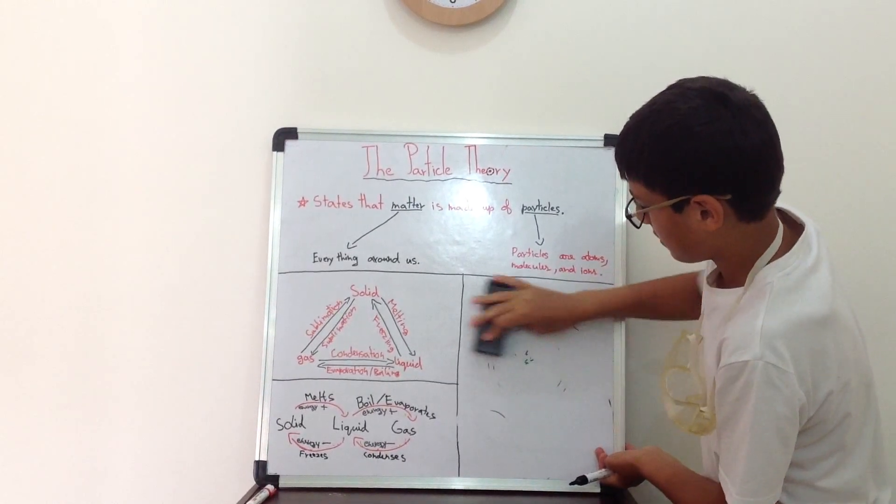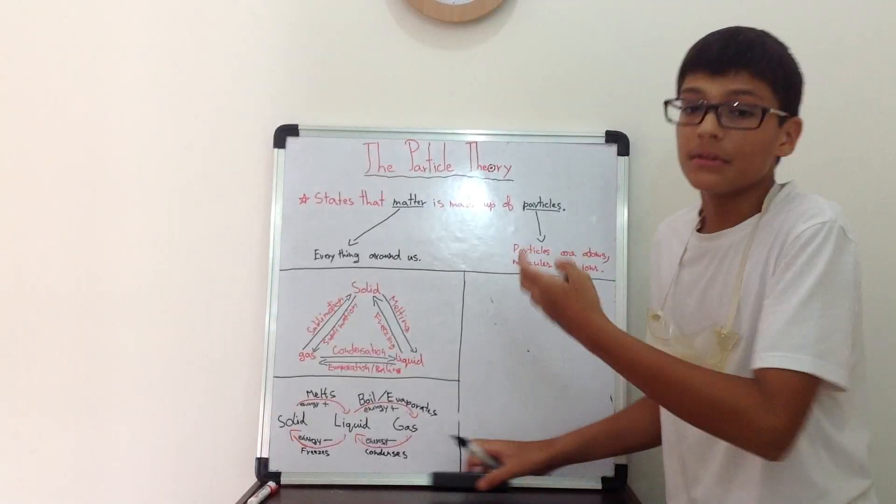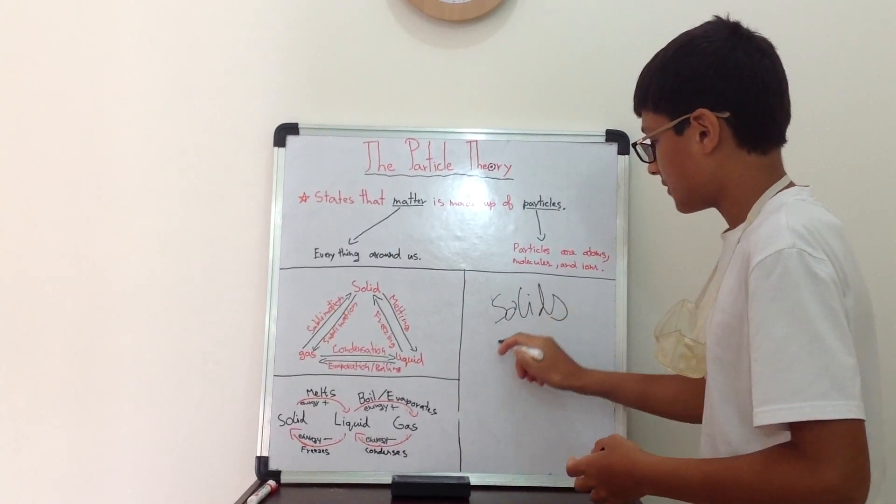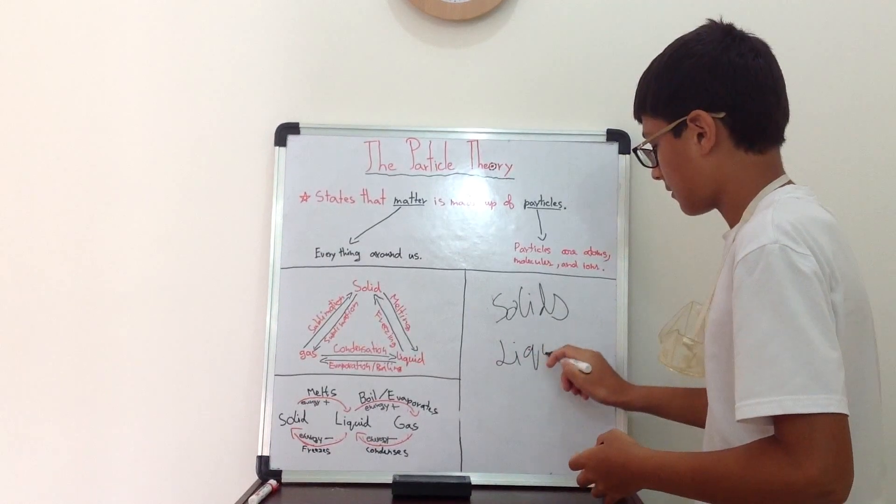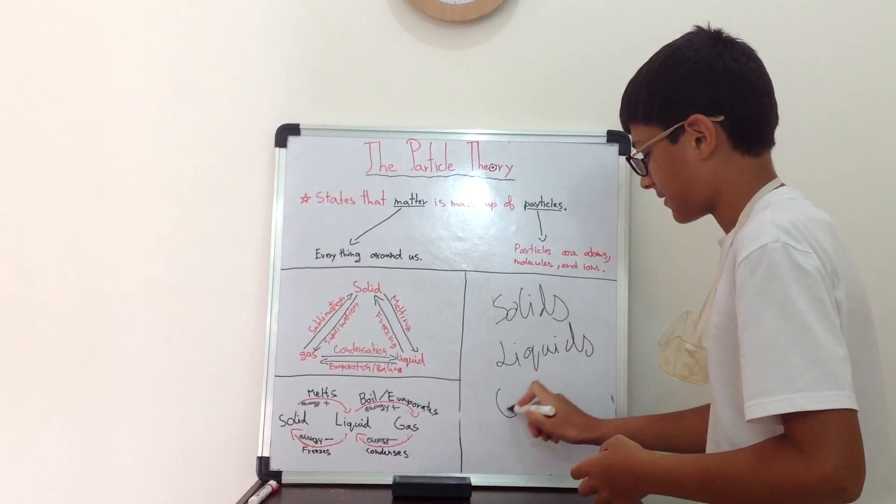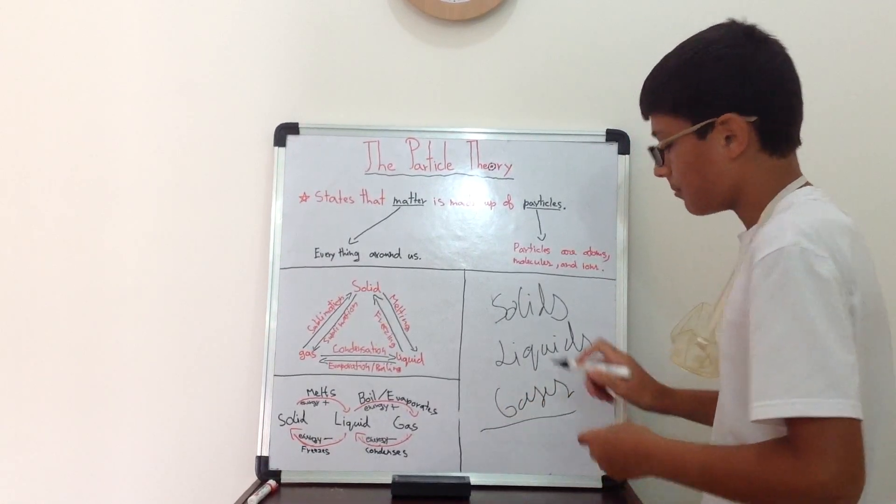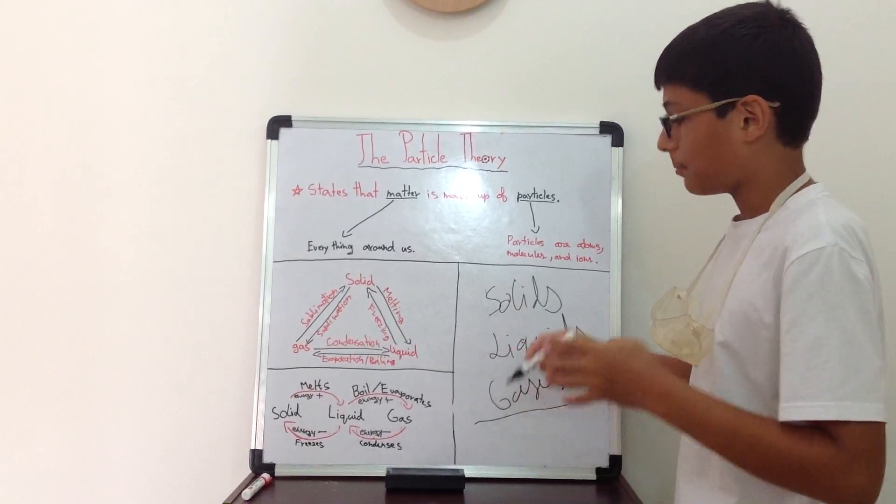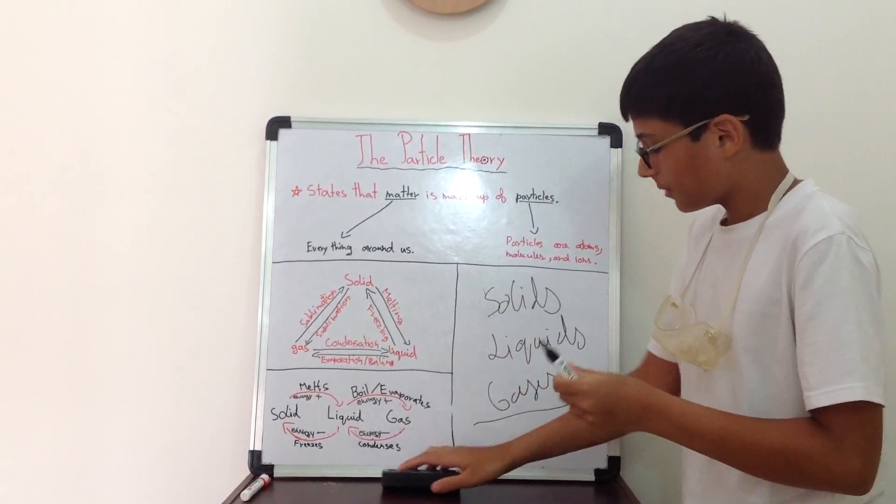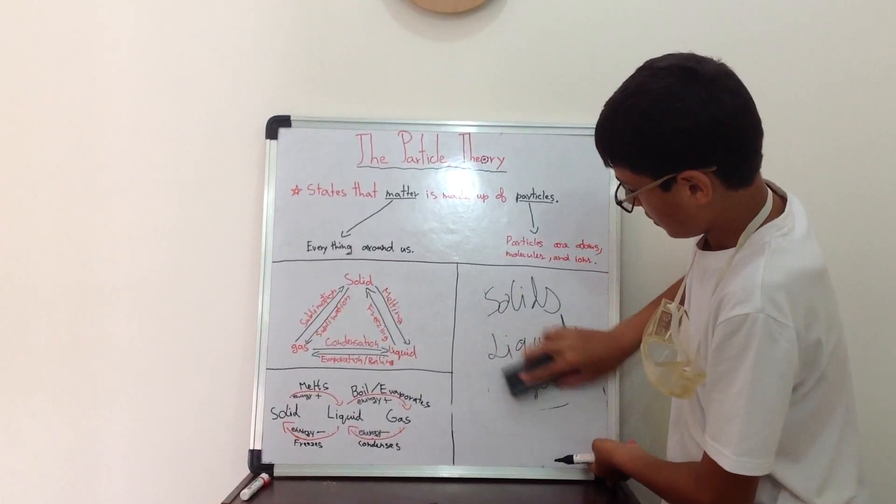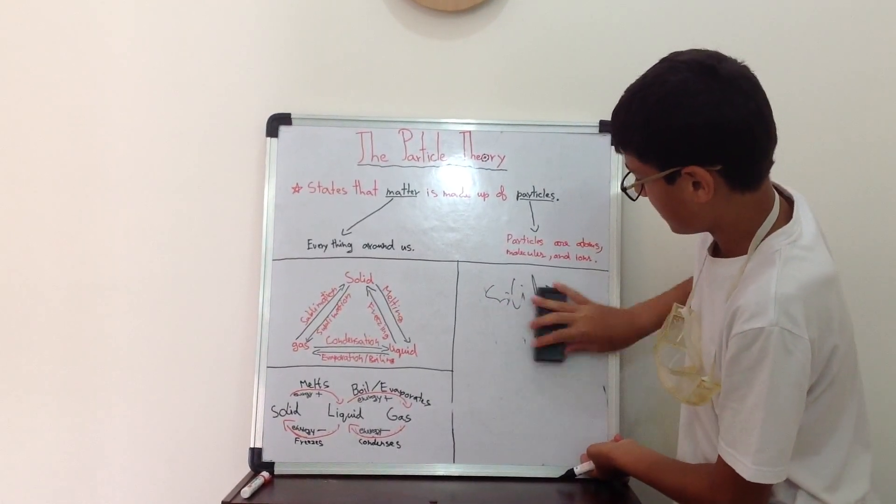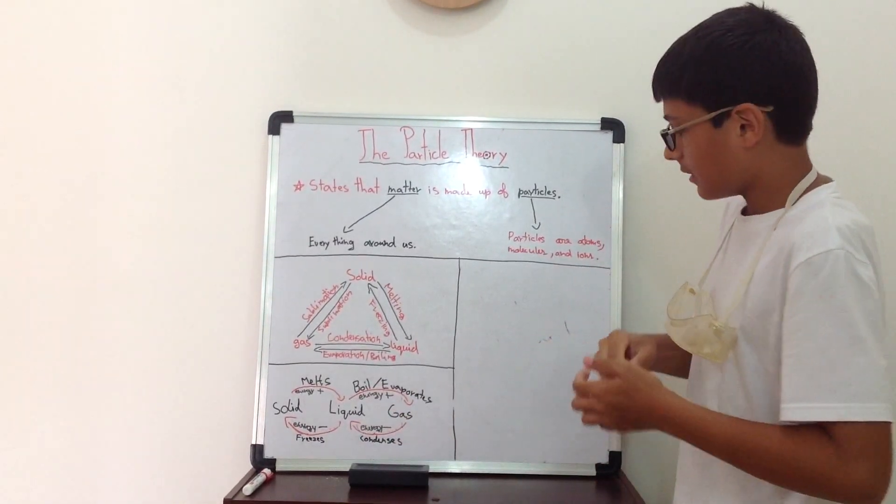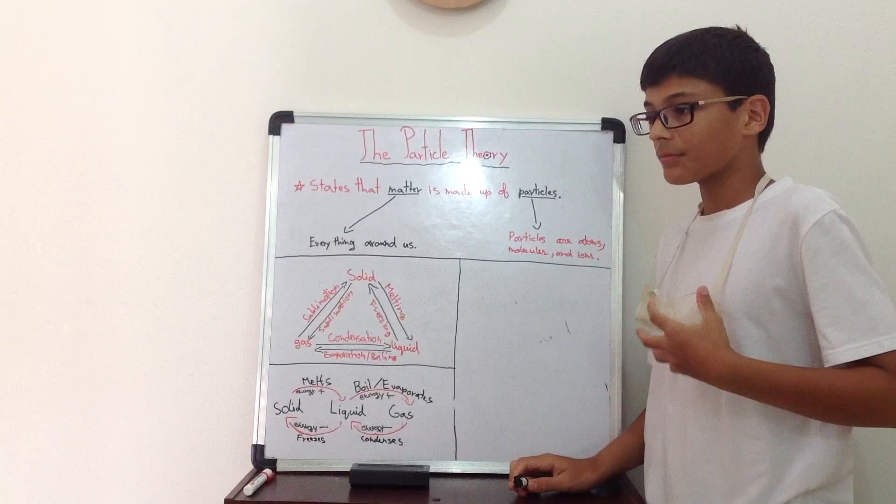Now, matter is made of different states, which are solids, liquids, and gases. These are the three main states of matter. There is also a fourth state of matter called plasma, but we will not be talking about that state because mainly solids, liquids, and gases correlate with each other very much. And solids, liquids, and gases have certain properties.